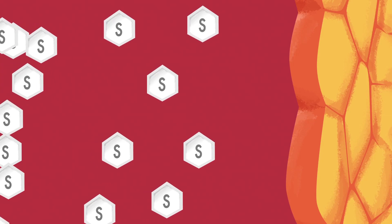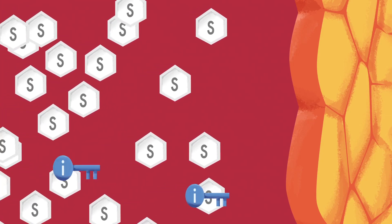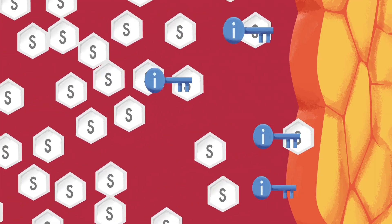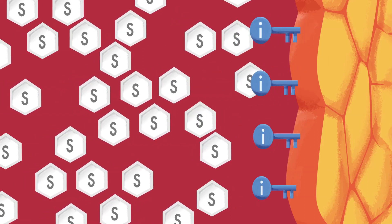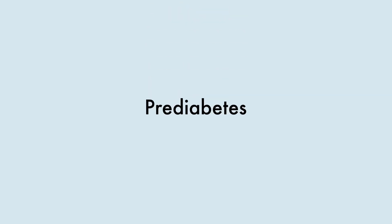your body's ability to scramble and store that sugar away begins to break down. This leads to a dangerous situation where the sugar in your bloodstream begins to rise. This is pre-diabetes and eventually type 2 diabetes.